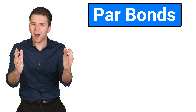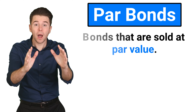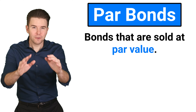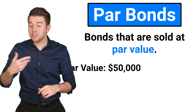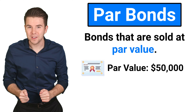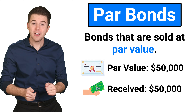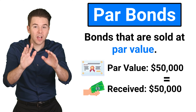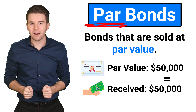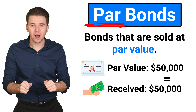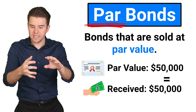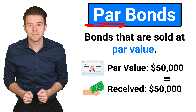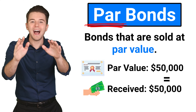What are PAR bonds? A PAR bond is a bond that's sold at PAR value. For example, if a company issues bonds with a $50,000 PAR value and receives $50,000 cash from investors, those bonds are sold at PAR. This is similar to golf — if the 9th hole is a PAR 5 and it takes you 5 strokes, you made PAR on that hole.